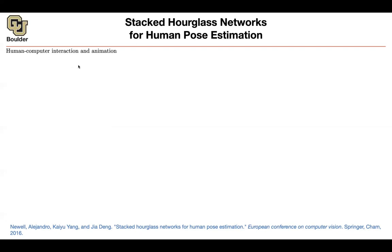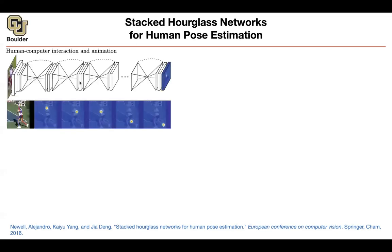The applications include human-computer interaction and animation. This is a neural network architecture where you need a multi-stage framework. The key idea is you need to have a shrinking and then expanding nature for your architecture, because you care not only about the global context of your image, but also about the local details — the same problem we had with segmentation. This multi-stage approach was also helping in the previous two papers.